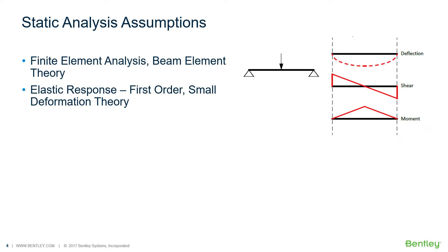Using the example of a simple supported beam, first order theory considers the basic shear, moment, and deflection with respect to the undeformed structure. Second order theory would consider additional stresses in the structure — like tension or compression in the top or bottom flanges — with respect to the deformed structure. Autopipe ignores second order effects.